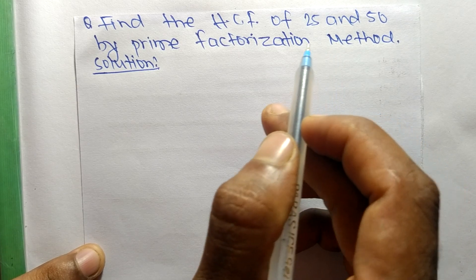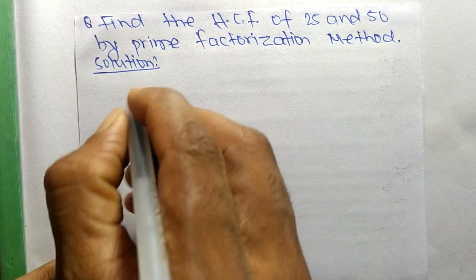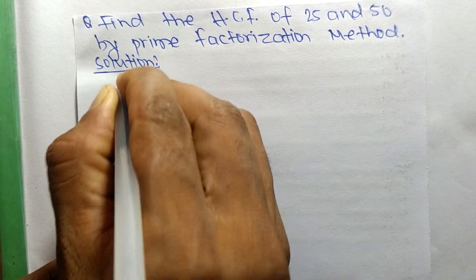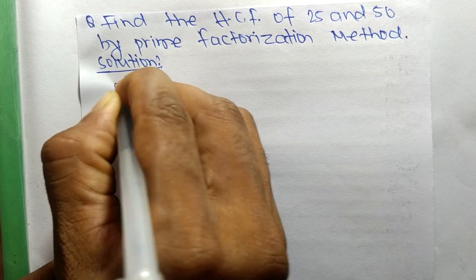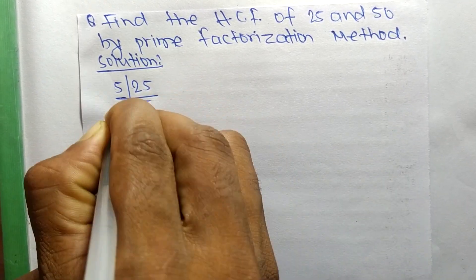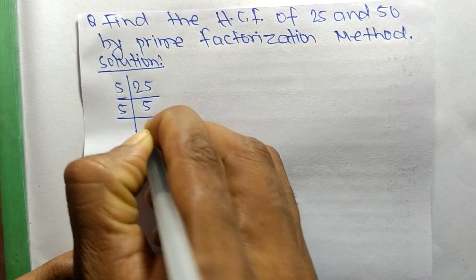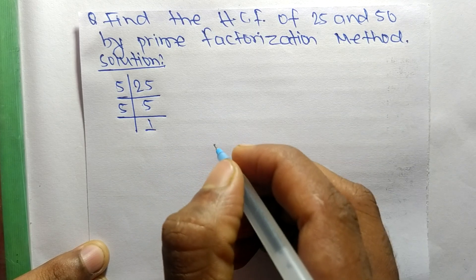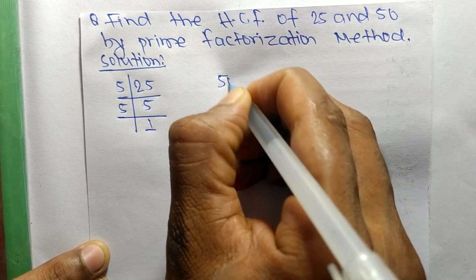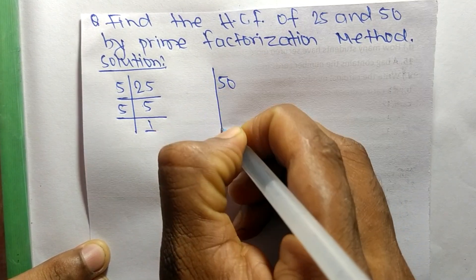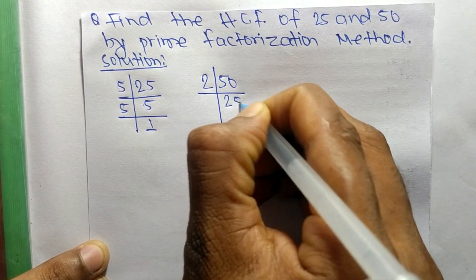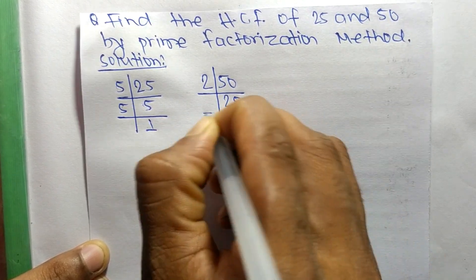First we find out the prime factors of 25: it is 5 times 5, which equals 25, and 5 times 1, which equals 5. Similarly, the prime factors of 50 are: 2 times 25, which equals 50.